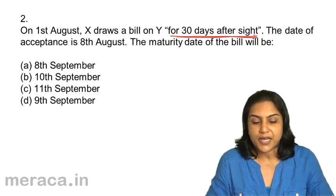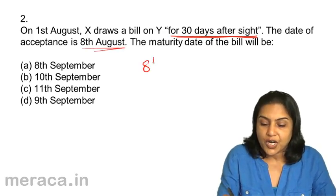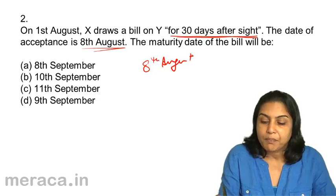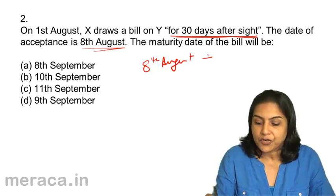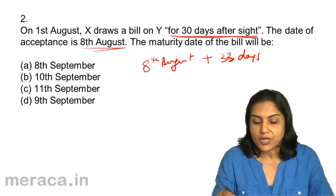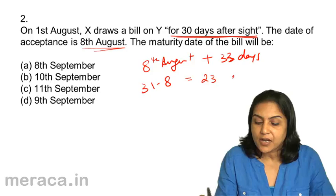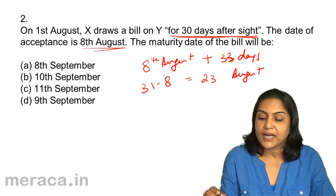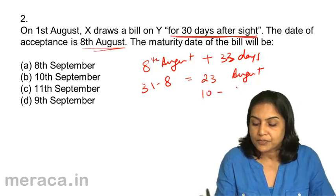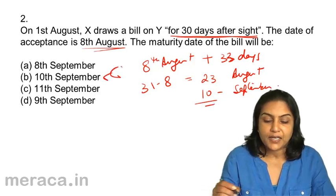It is 30 days after sight. X draws a bill on Y for 30 days after sight; the date of acceptance is 8th August. Therefore, we should start from 8th August. 8th August plus 30 days plus 3 days of grace equals 33 days. Days remaining in August: 31 minus 8 equals 23 days. We need another 10 days, therefore 10 days of September. 10th September should be the date. 2b.